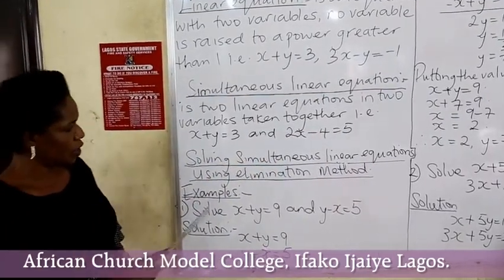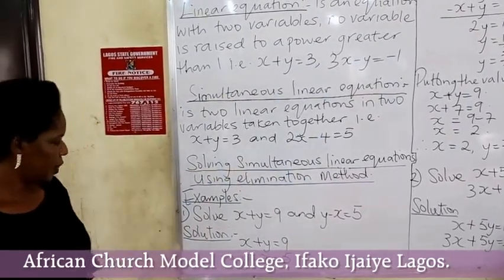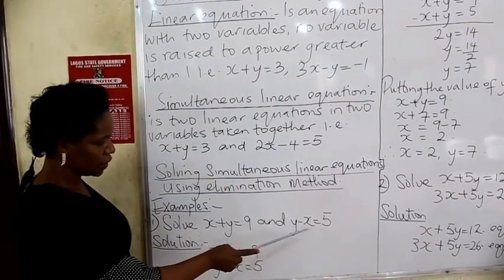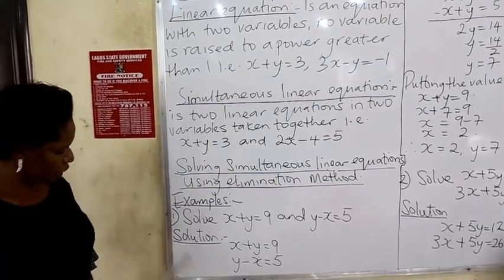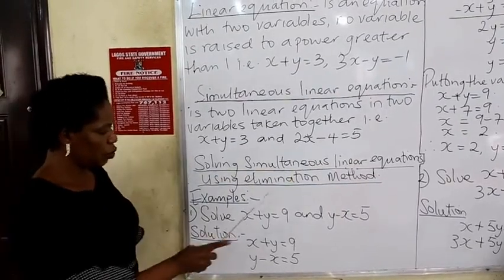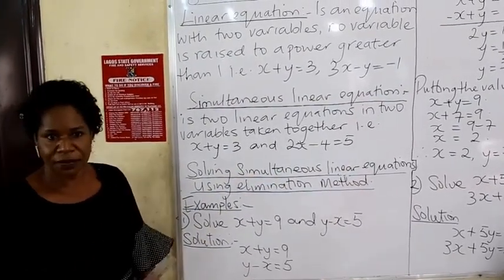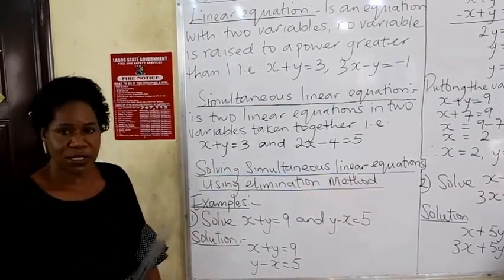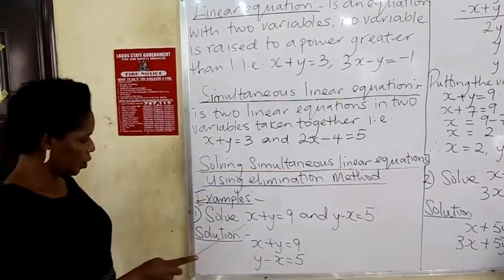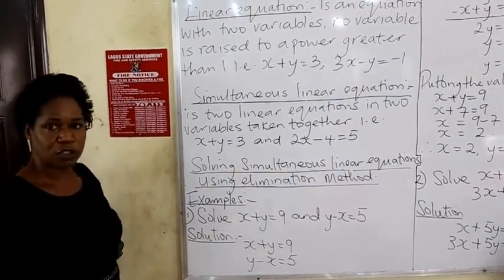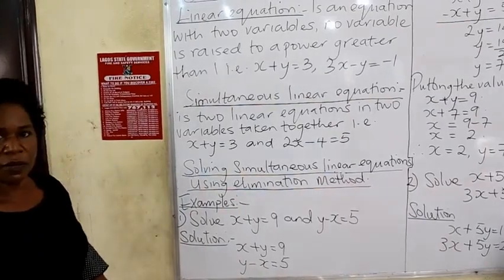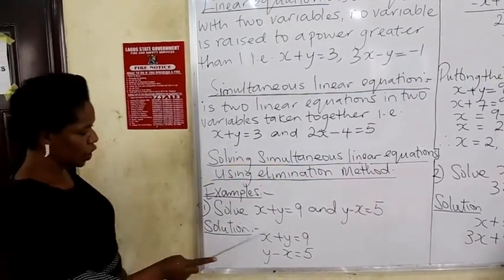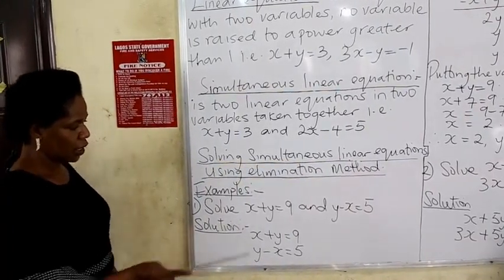How can we solve simultaneous linear equations using the elimination method? Let us look at this example. Solve: x plus y equal to 9, and y minus x equal to 5. Before you can apply the elimination method, first and foremost, your two variables in equation 1 and equation 2 must be under each other — that is, x must be under x and y must be under y. We are also going to consider their numerical coefficients: the coefficient of x in equation 1 and the coefficient of x in equation 2 must be the same regardless of sign. The coefficient of y must also be equal.